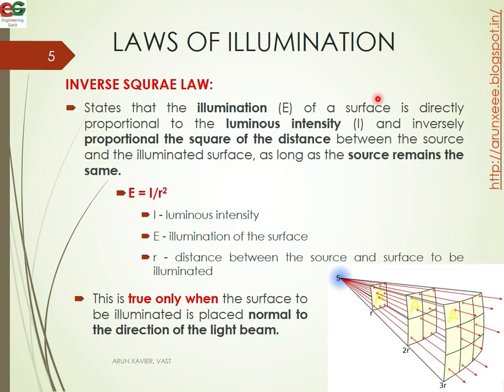Next, we have two different laws. That is, the inverse square law and the cosine law. The inverse square law states that the illuminance of a surface is directly proportional to the luminous intensity, and inversely proportional to the square of the distance between the point source and the illuminated surface. So, E is equal to I divided by r squared.